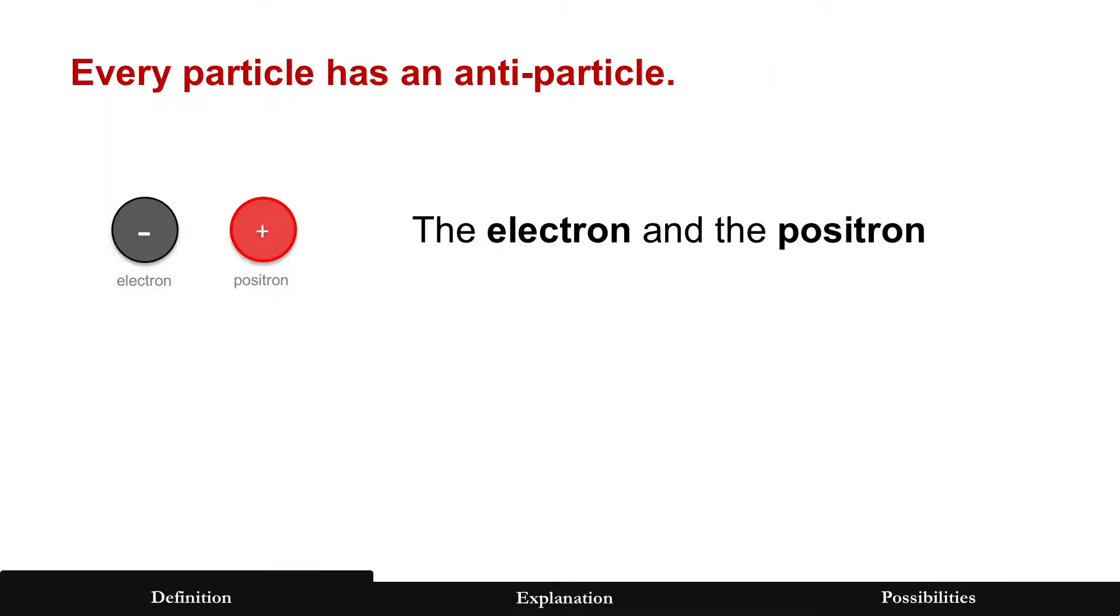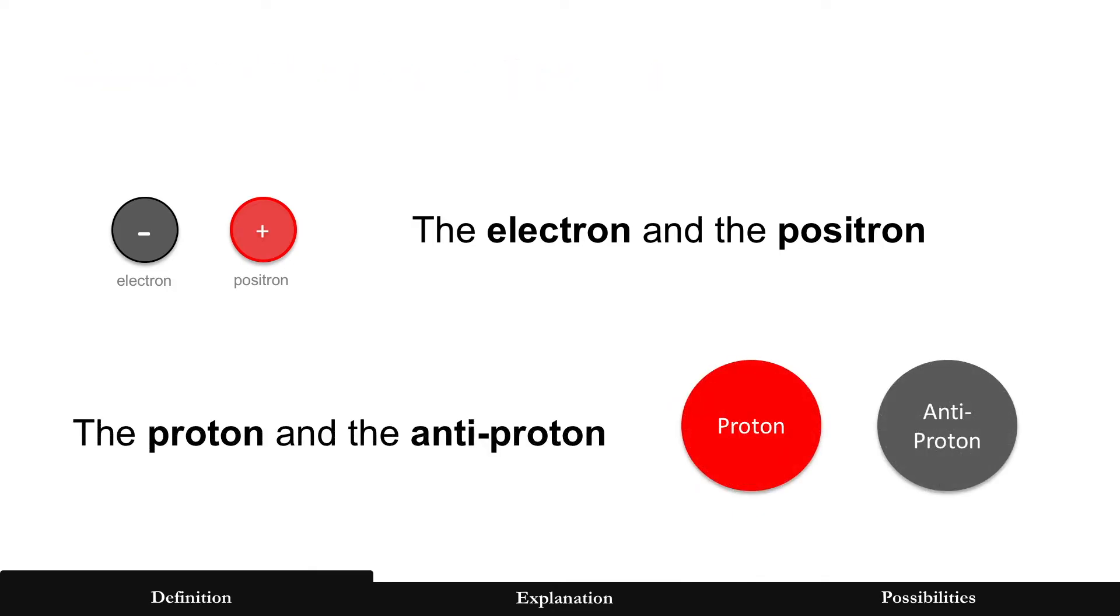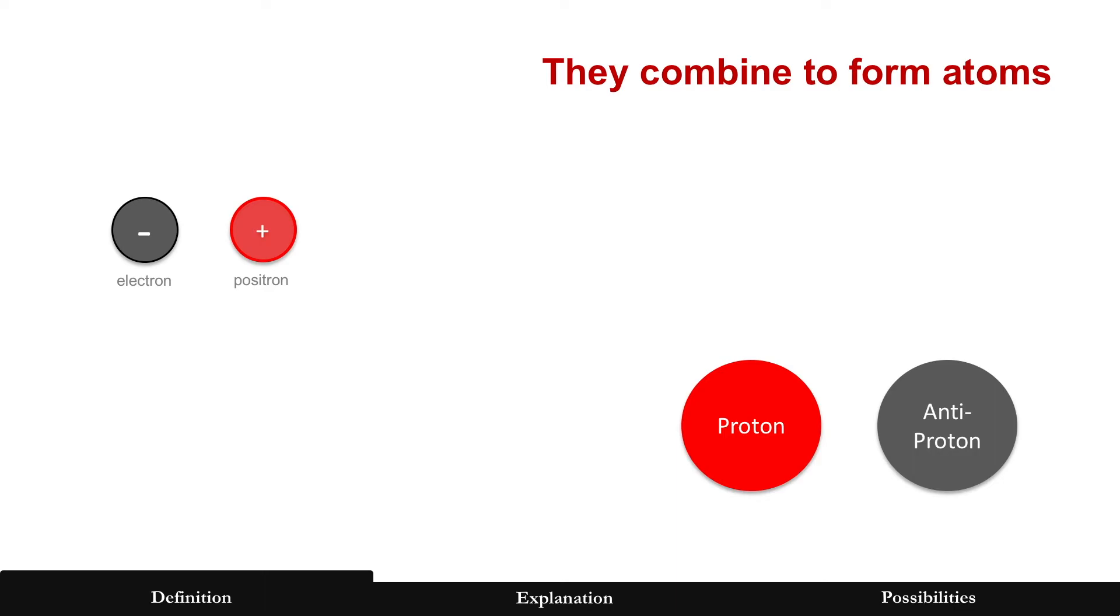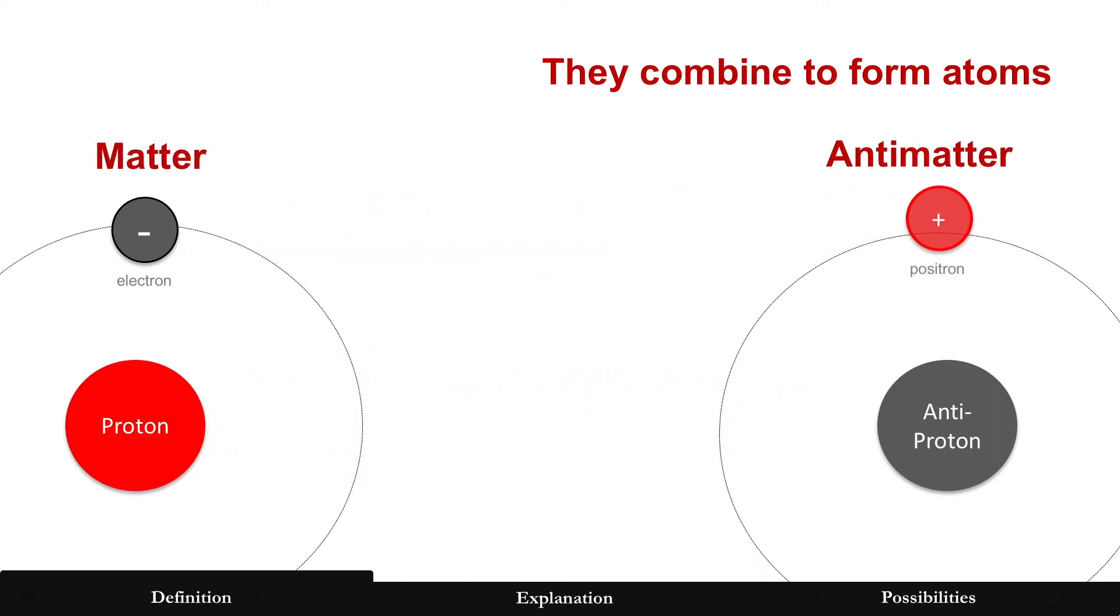And so every particle has an antiparticle because it's really just opposite charge. For the electron, as mentioned, it's the positron and again for the proton it's called the antiproton. And when they combine to form atoms, this is matter on the left and antimatter on the right.